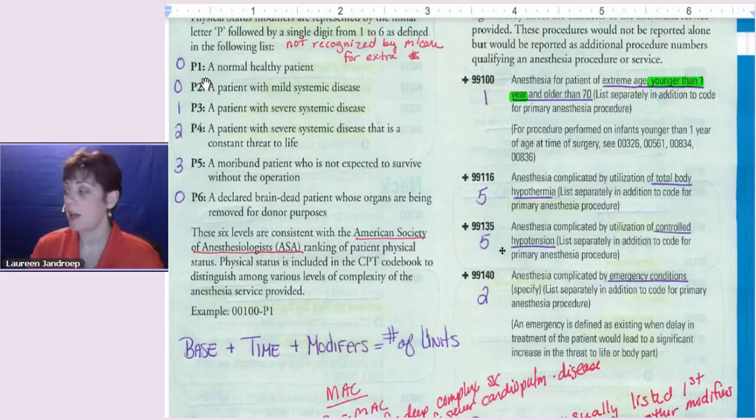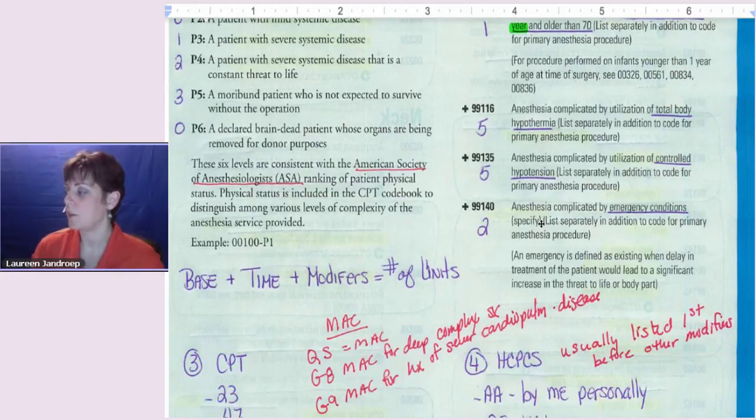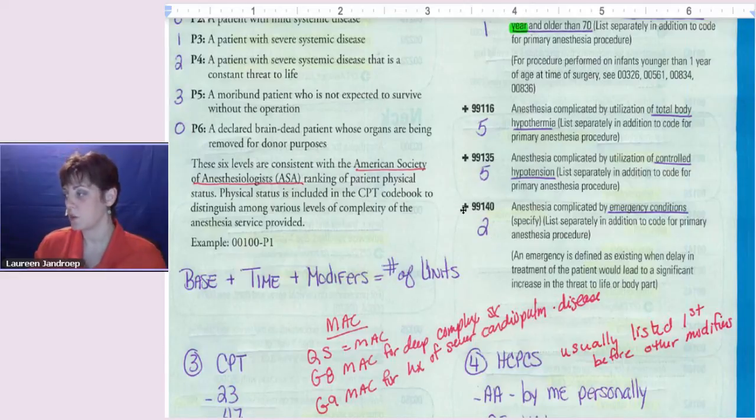99135 is anesthesia complicated by utilization of controlled hypotension. So now they're lowering the patient's blood pressure on purpose to perform the procedure. That's also worth 5 points. And then 99140 is anesthesia complicated by emergency conditions. That's worth 2 points. So that's how those modifiers work.